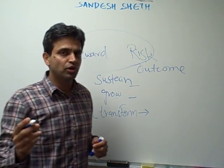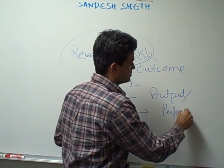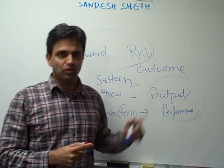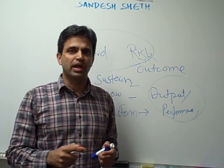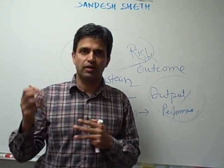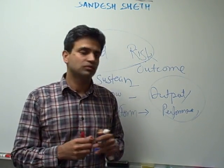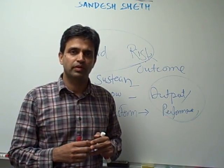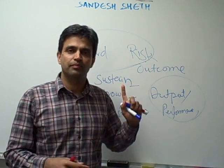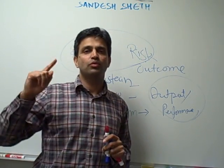And then we have the output or performance measures. What is the difference between the two? A common example: let's say that in a particular country I want to eradicate smallpox, and therefore all children below the age of 12 are to be vaccinated with the smallpox vaccine. The number of vaccinations is an output or performance measure. The percentage drop in smallpox cases because of the vaccinations is the outcome measure — outcome measure is always linked with the strategic goal.